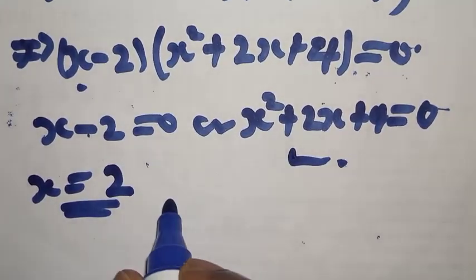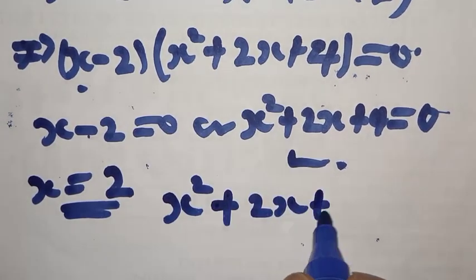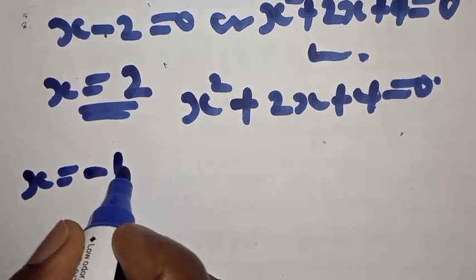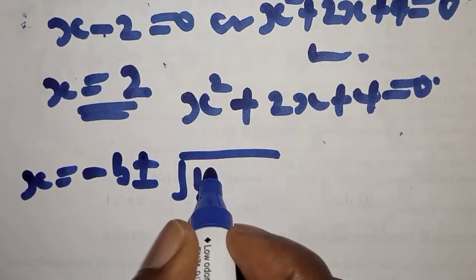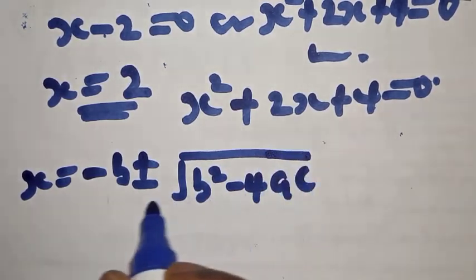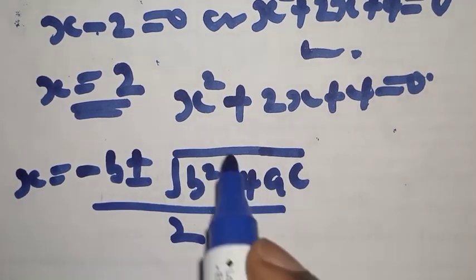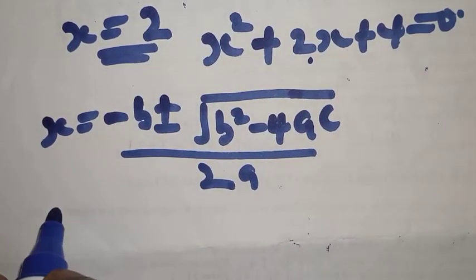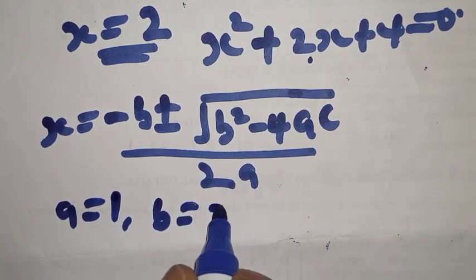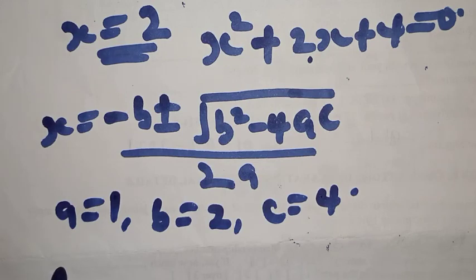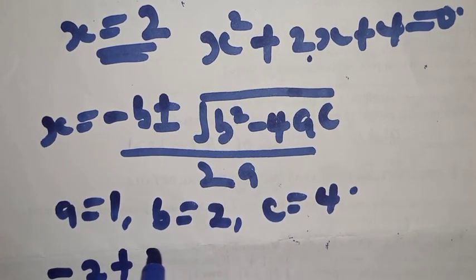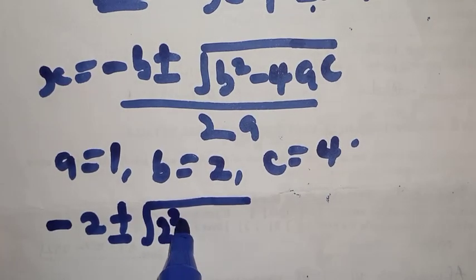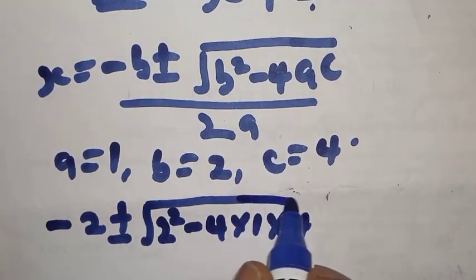Now let's solve the other part: s squared plus 2s plus 4 equals 0. Using the quadratic formula, s equals negative b plus or minus square root of b squared minus 4ac, all over 2a. Here a is 1, b is 2, and c is 4. Substituting: s equals negative 2 plus or minus square root of 2 squared minus 4 times 1 times 4, over 2 times 1.